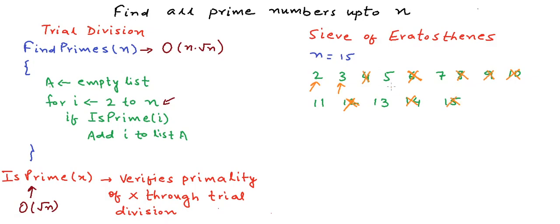The next remaining prime number in this list is 5. Multiples of 5 — 10 and 15 — are already struck off. The next remaining number is 7, and its only multiple in range, 14, is already struck off. The remaining numbers 11 and 13 have no multiples in this range. All the remaining numbers are prime.